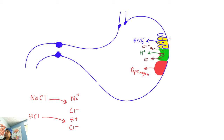To summarize: mucus cells (M cells) produce mucus/bicarbonate; parietal cells (P cells) produce HCl and intrinsic factor; chief cells produce pepsinogen. Please memorize these names. They're all columnar cells — some are just specialized with specific products.